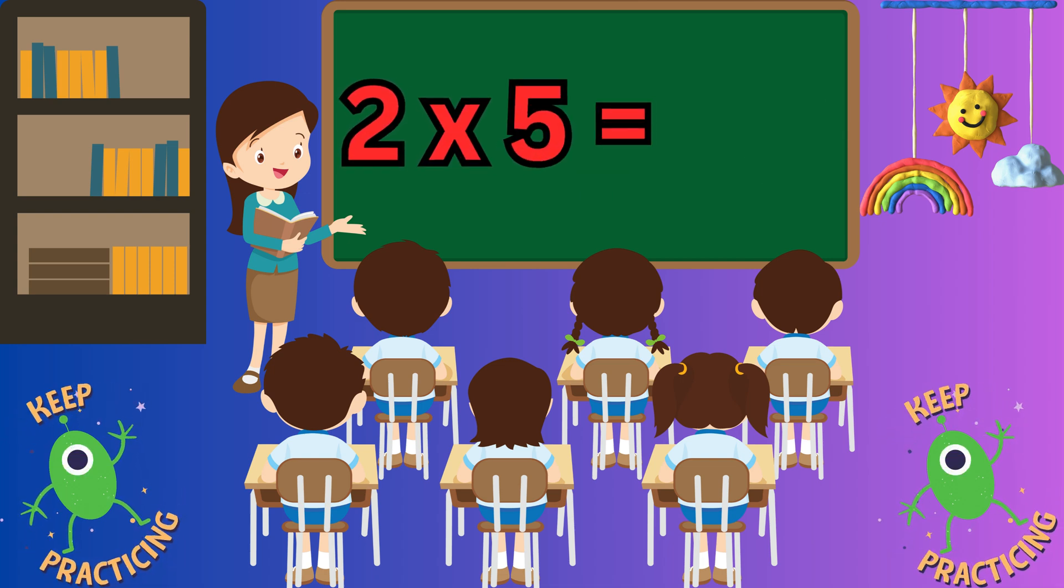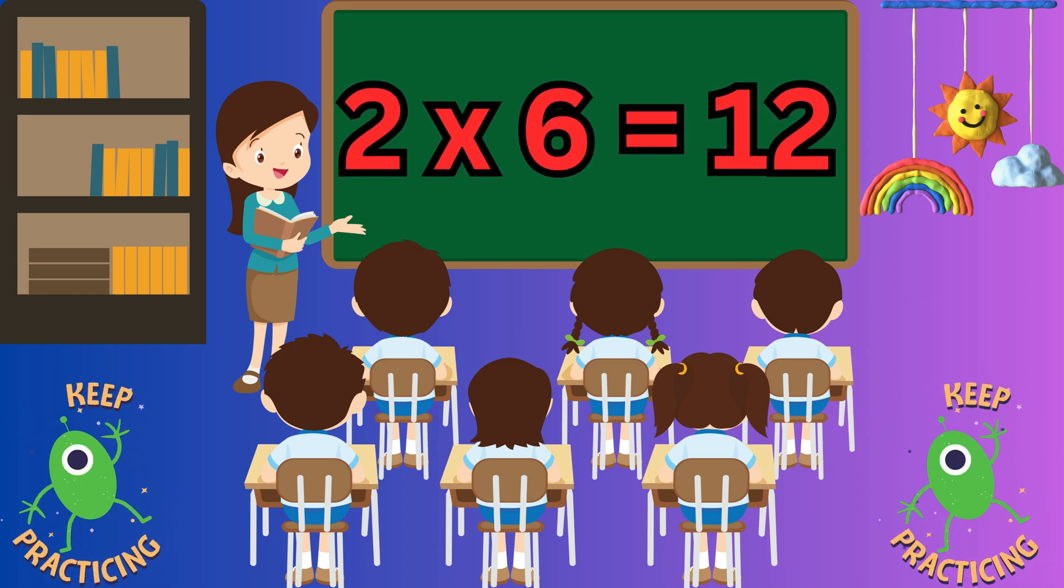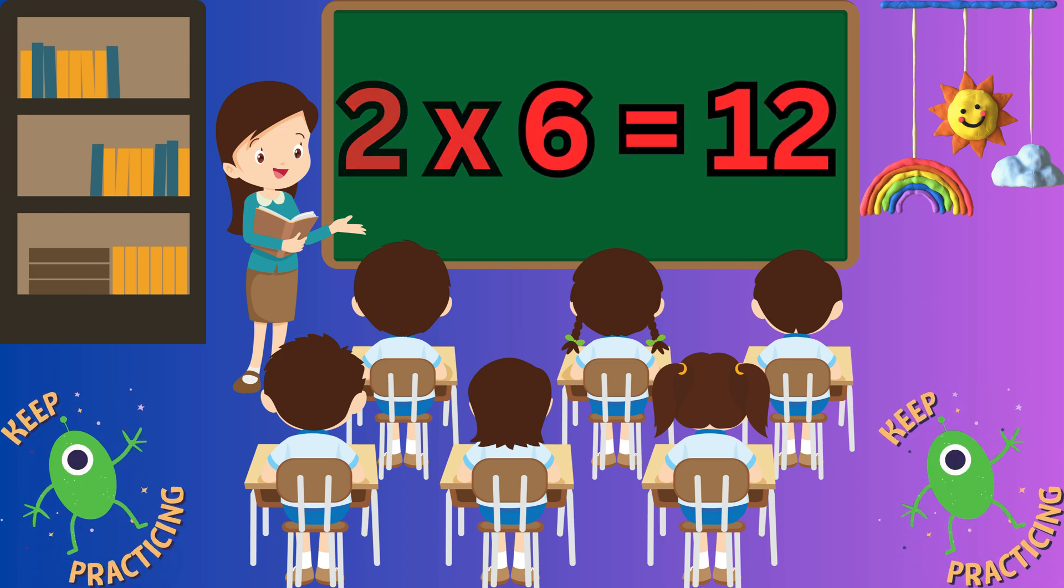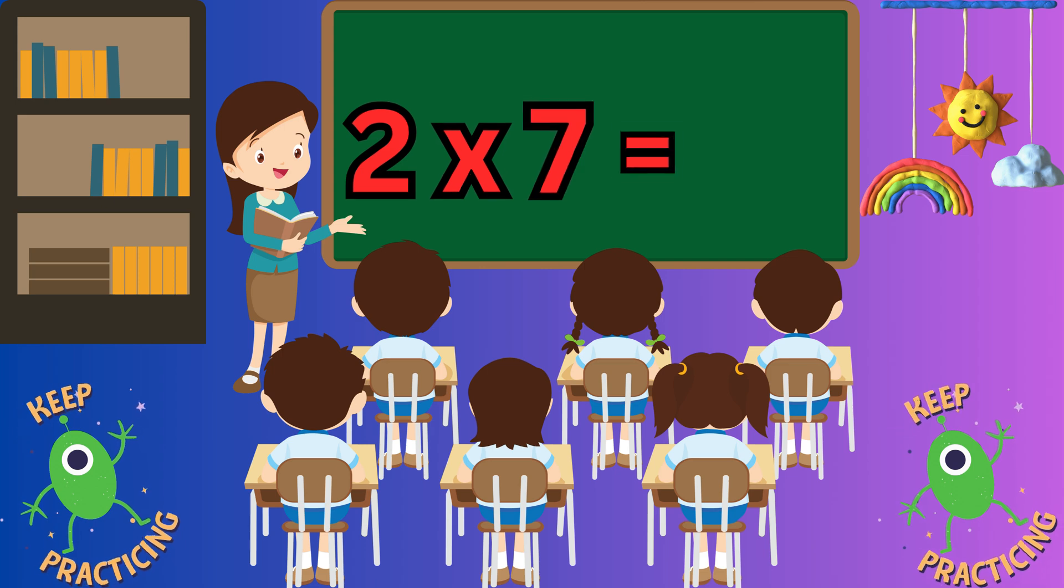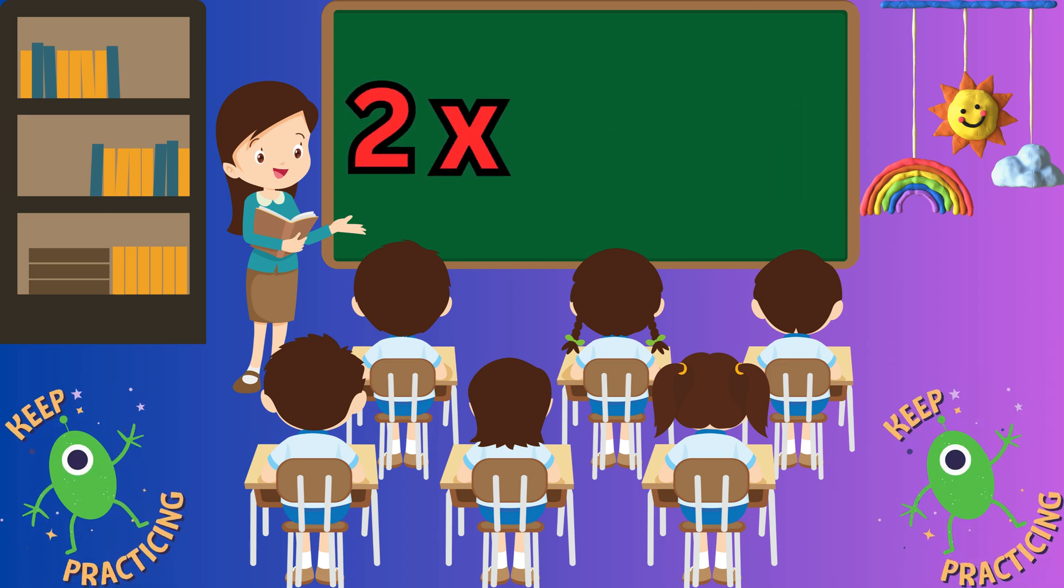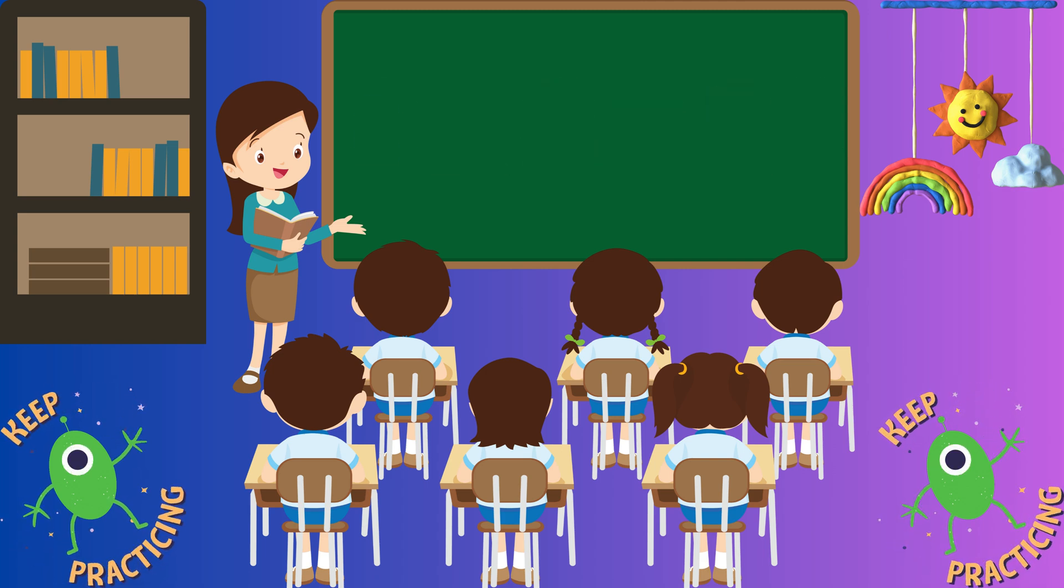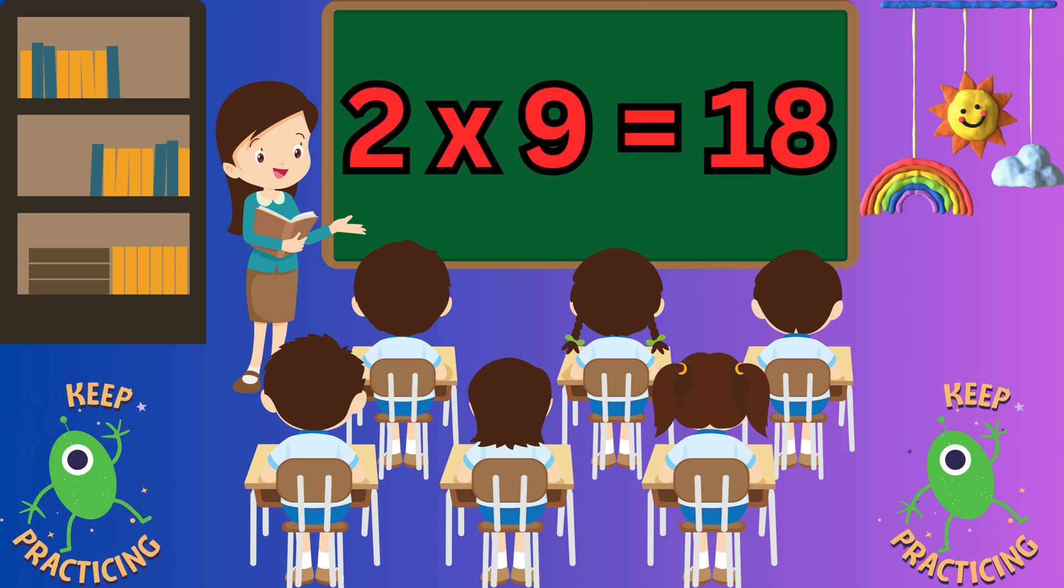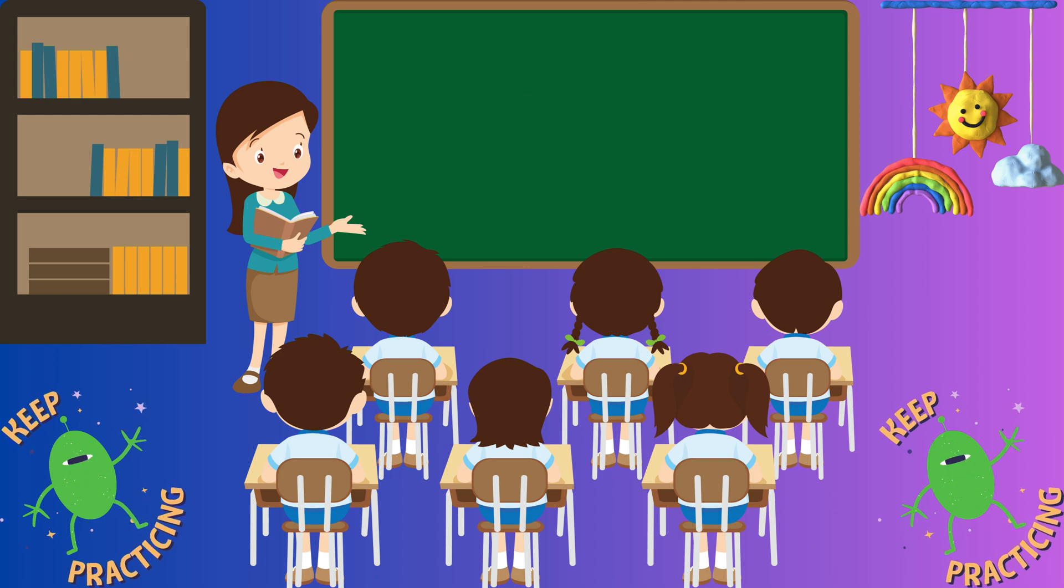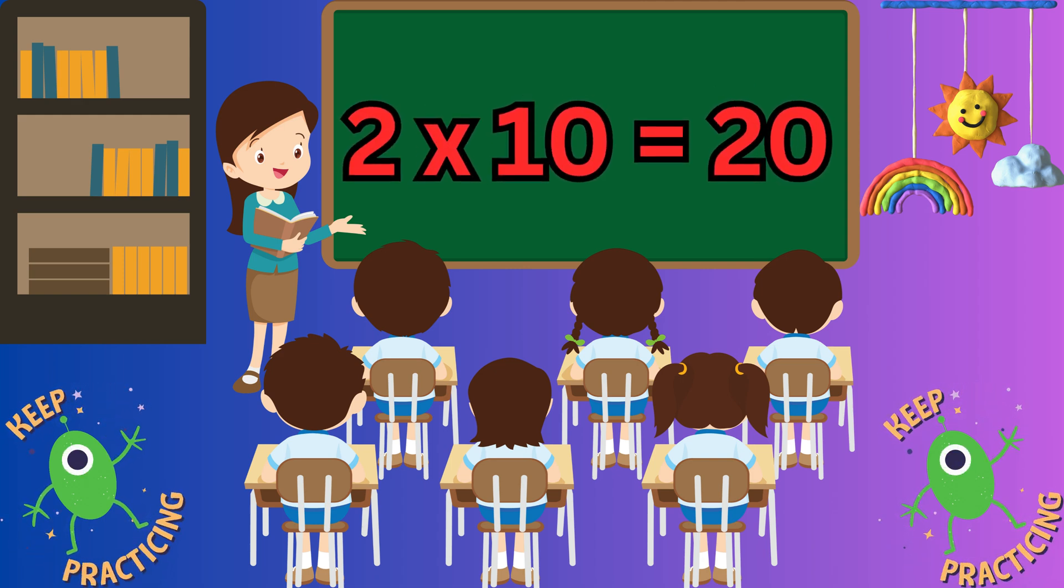Two fives are ten. Two fives are ten. Two sixes are twelve. Two sixes are twelve. Two sevens are fourteen. Two eights are sixteen. Two nines are eighteen. Two nines are eighteen. Two tens are twenty. Two tens are twenty.